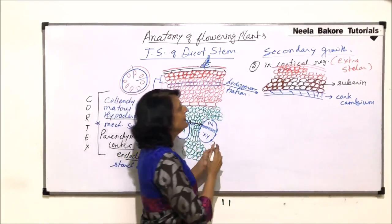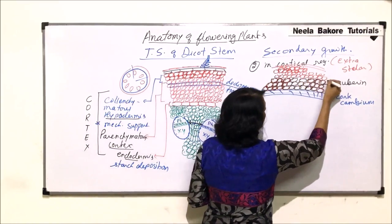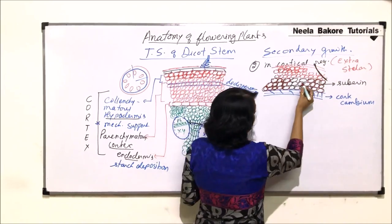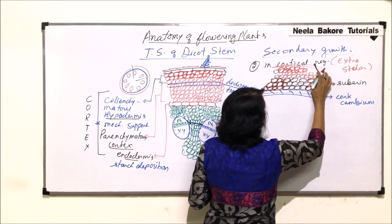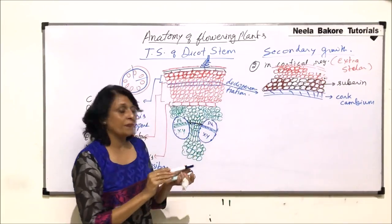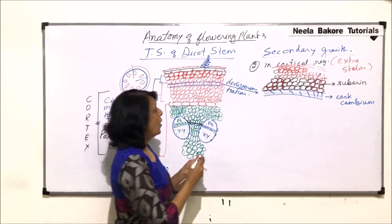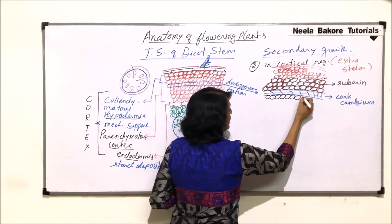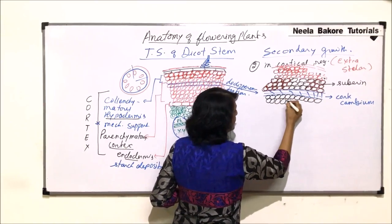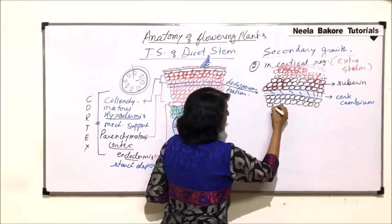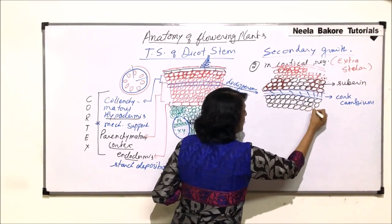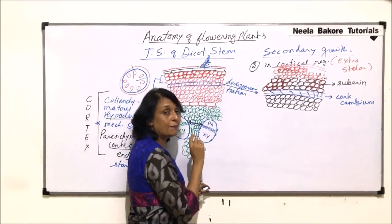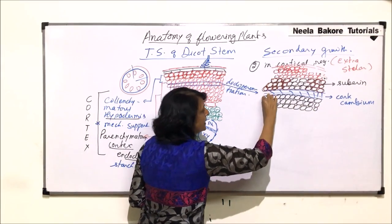After some time, these cells will fall off. On the inner side, cork cambium produces normal parenchymatous cells. So this cork cambium, which was formed from a few cells of the primary cortex, gave rise to a layer outside and a layer inside.